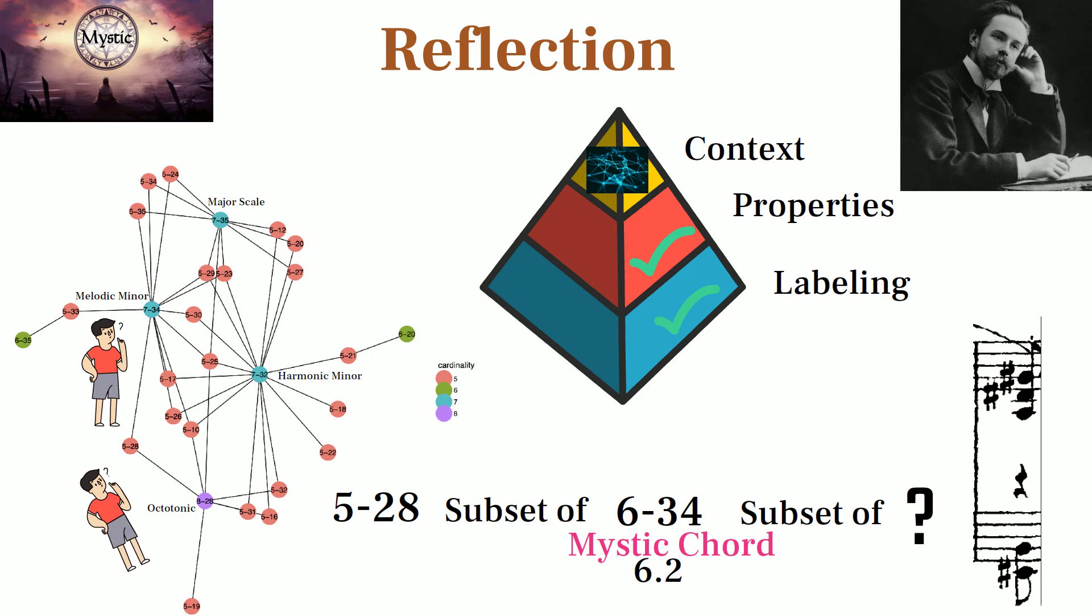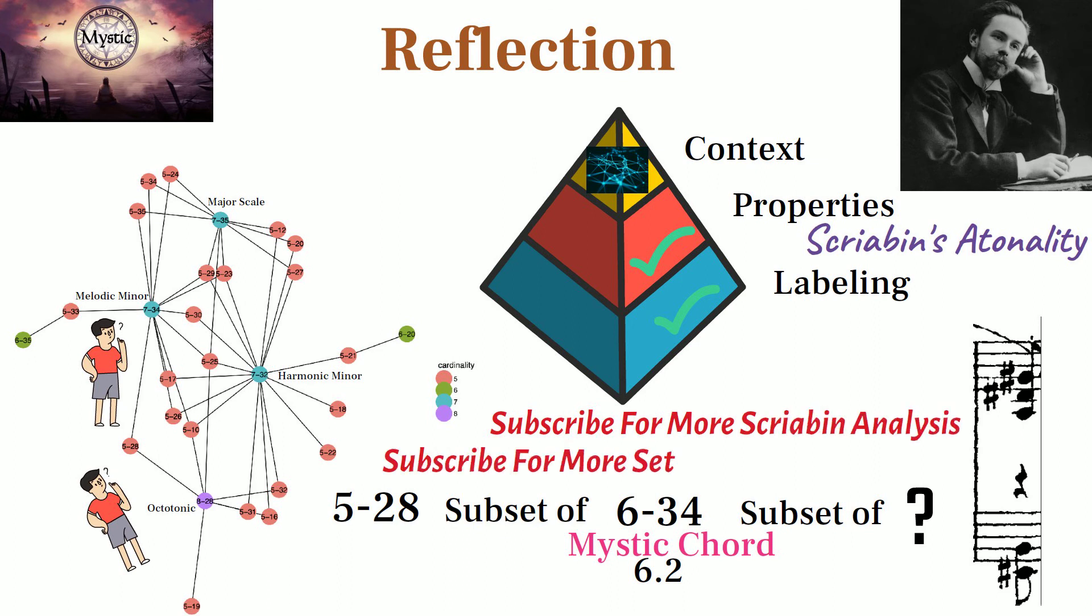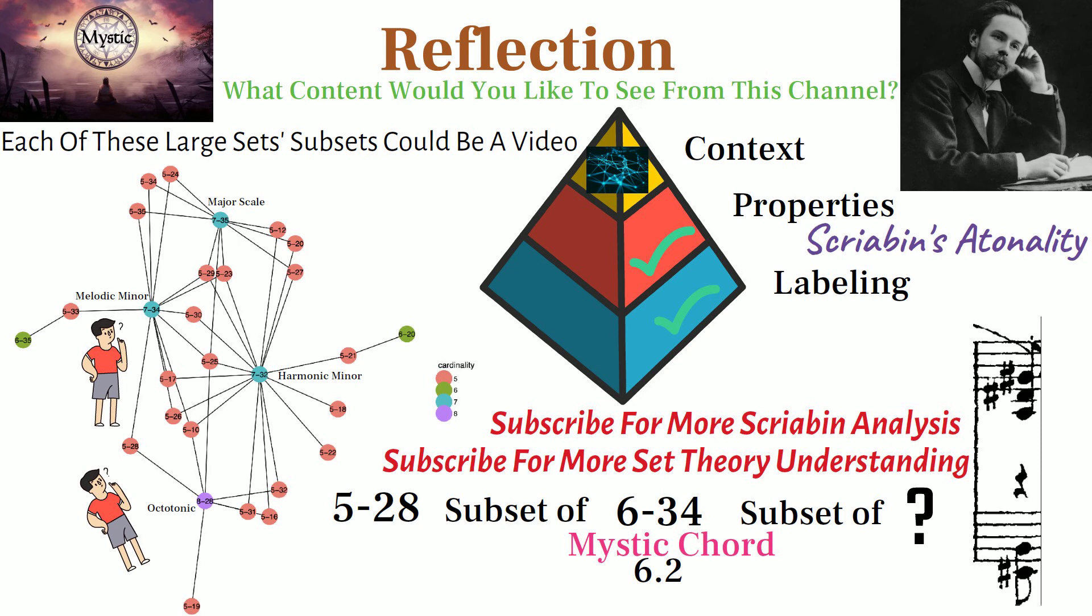I hope to go deep into that sort of analysis in my next series, Scriabin's Atonality. I would also like to make a series that systematically dives into these webs of connections between sets to help provide an overall understanding of the entire set universe. Let me know if you all are interested in the comments along with your thoughts on complements and supersets.